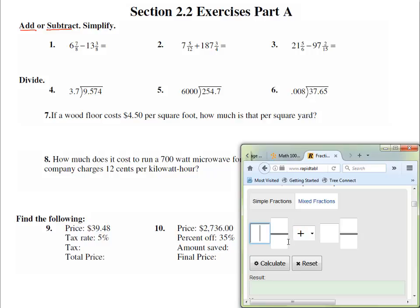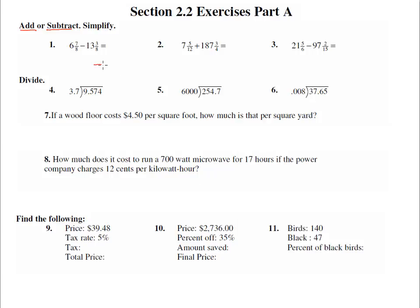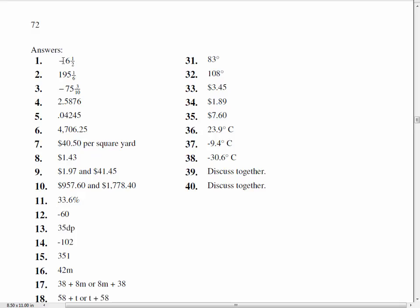This is a calculator that I googled to be able to handle fractions. So we're going to punch in 6 and 7 eighths, and it is minus 13 and 3 eighths. I hit calculate, and the results will give it to me in improper fractions, negative 13 halves, or negative 6 and a half, or negative 6.5. I'm going to write negative 6 and a half. Let's check our answer to make sure it's correct, and there we have it, negative 6 and a half.